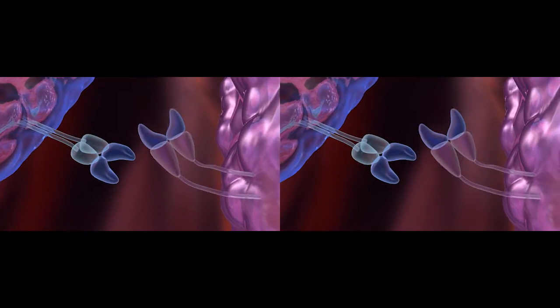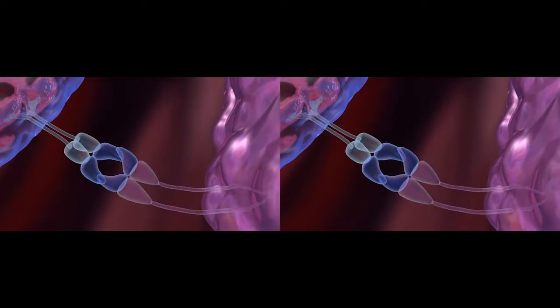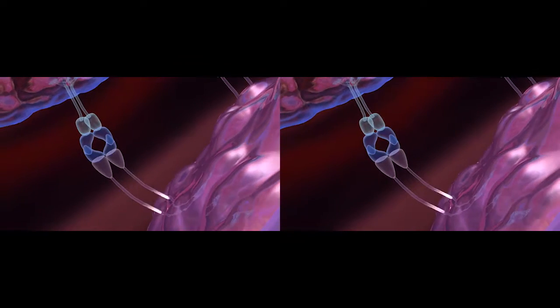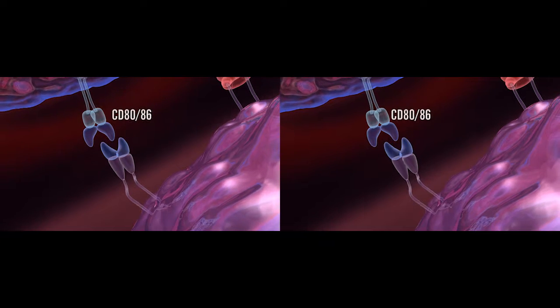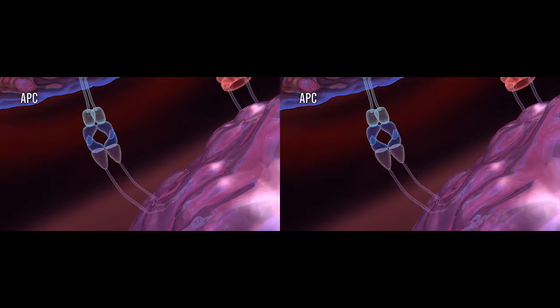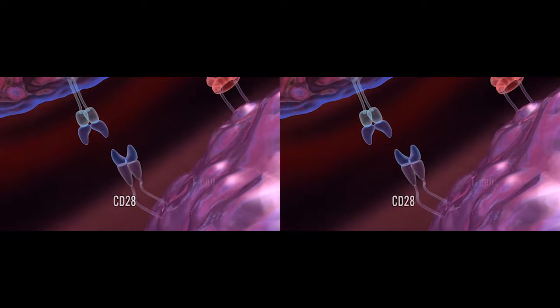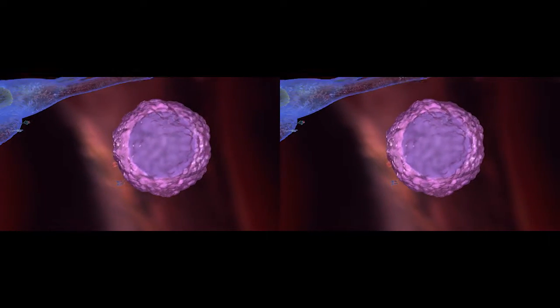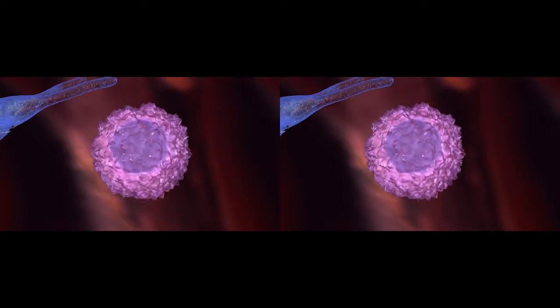One of the best characterized co-stimulatory pathways is the engagement of CD80/86 on APCs with CD28 on T cells. This produces positive co-stimulatory signals and facilitates T cell activation, proliferation, survival, and cytokine production.